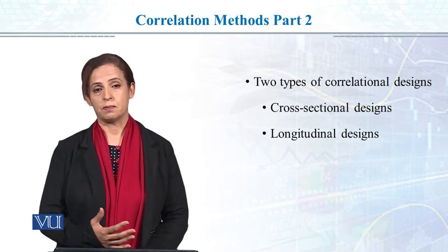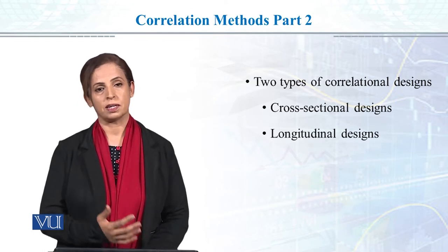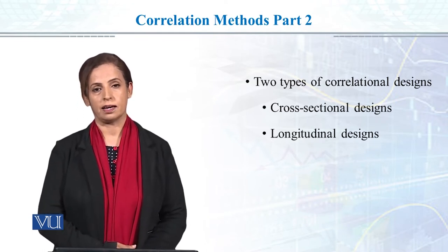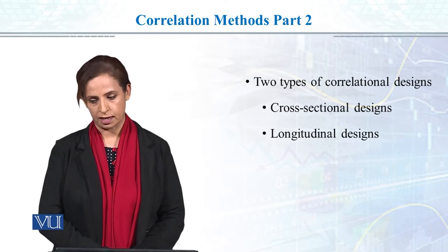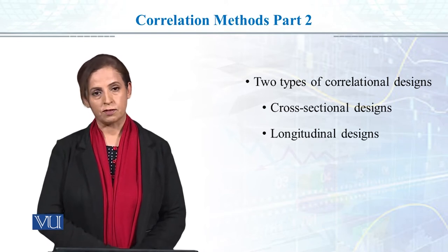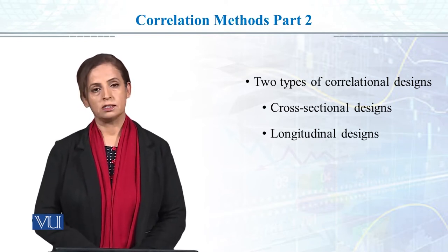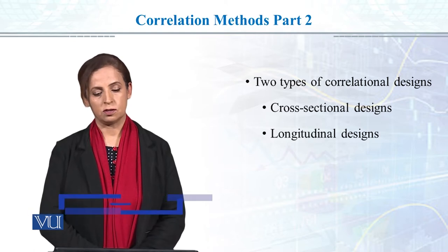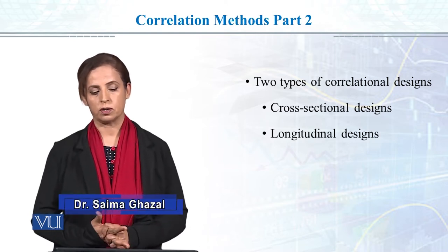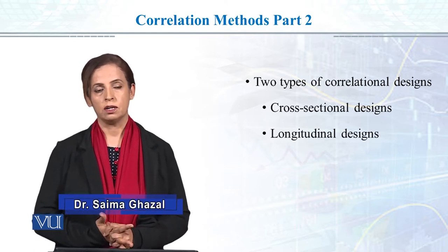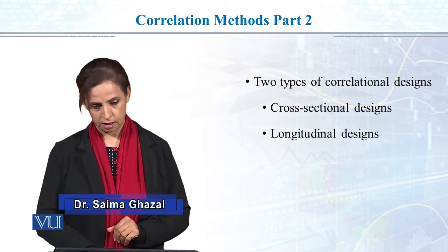The statistics we have to use in testing hypotheses will come from our research design. In correlational research, there are two types of most commonly used research designs: cross-sectional and longitudinal research design.